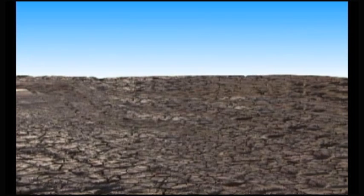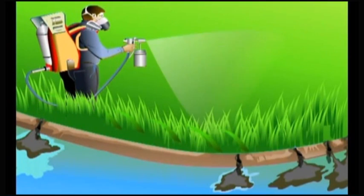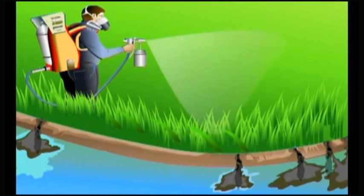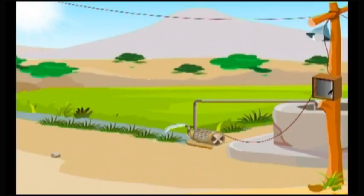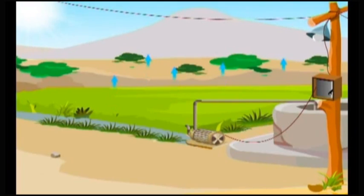Salination of soil is becoming a major problem due to intensive agricultural operations to increase food production. To provide favourable conditions for growth, agricultural lands are heavily irrigated. If the drainage system is poor, water evaporates and salts are deposited in the soil.